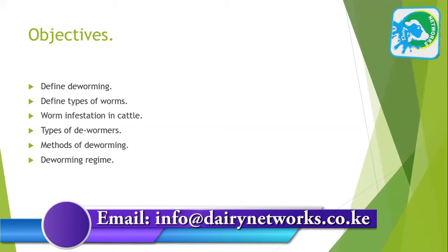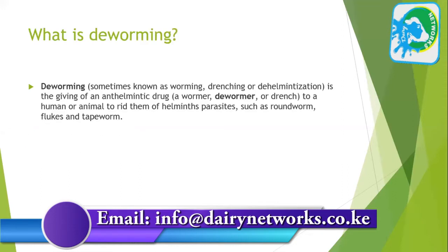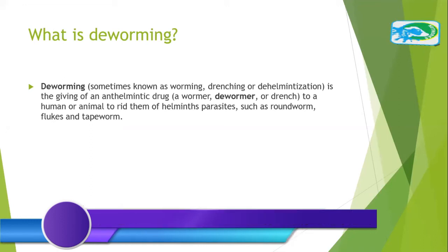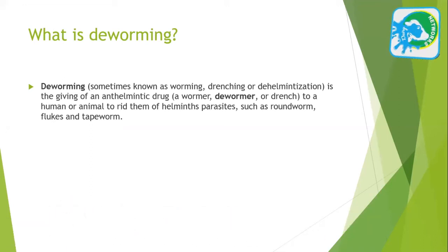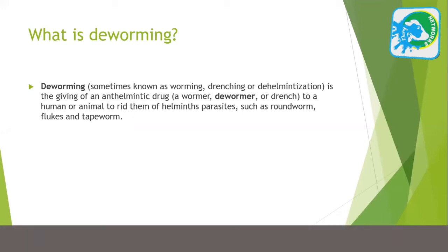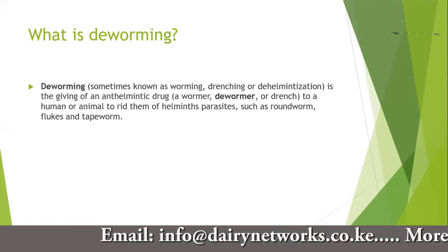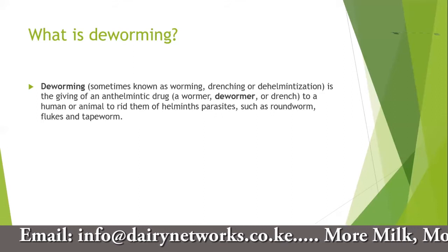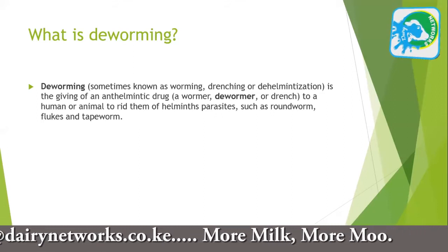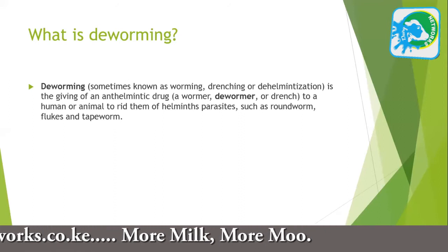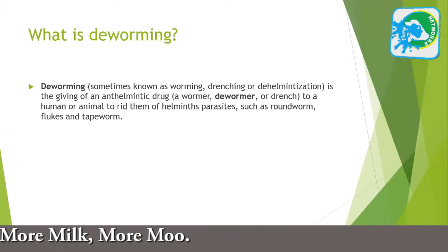De-worming is defined as giving anti-helminthic drugs. For the scientific terminology, we term worms as helminths — those parasites that occupy the internal organs of animals. So when you give a drug to eliminate these helminths into the system, that is the act we define as de-worming.